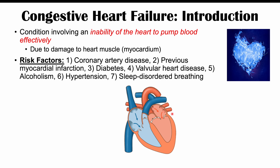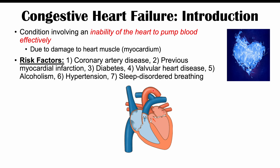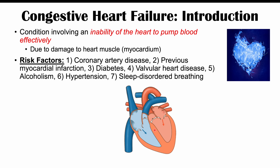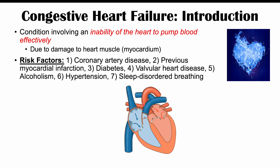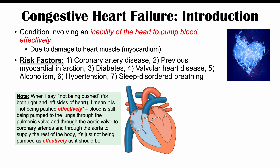That blood goes to the lungs, becomes oxygenated, and comes back into the left heart through four pulmonary veins into the left atrium. The left atrium brings blood into the left ventricle, which contracts and pushes blood through the aortic valve into the aorta to supply the rest of the body. Knowing that anatomy, if there is right heart failure — meaning the right side doesn't contract properly, perhaps due to myocardial damage — blood continually brought into the right atrium and ventricle starts to back up into the superior and inferior vena cava and into other parts of the venous system.